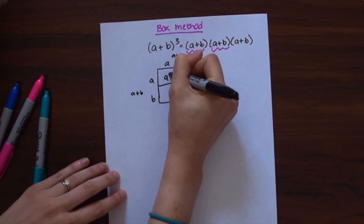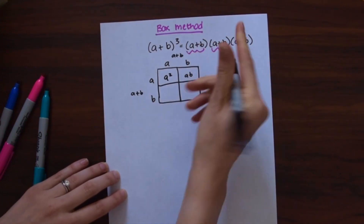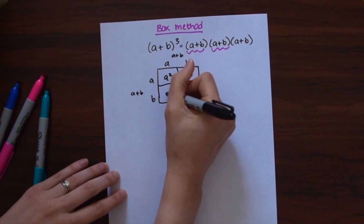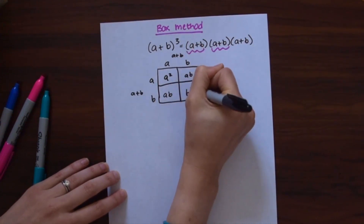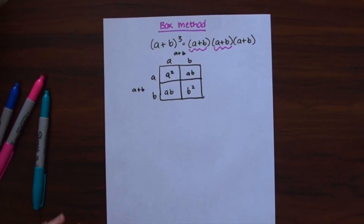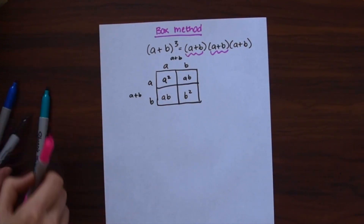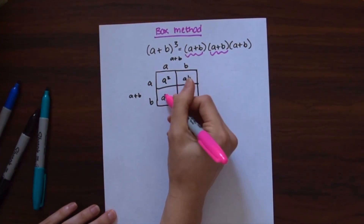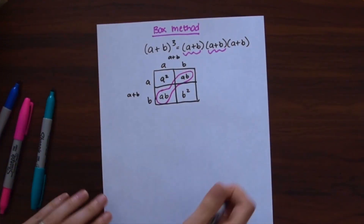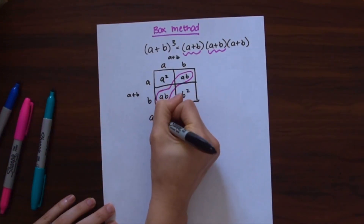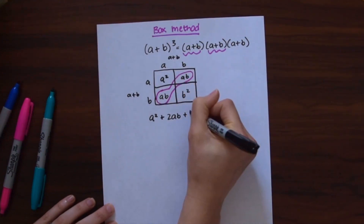So a times a is a squared, a times b is ab, a times b is ab again, and b times b is b squared. The solution to (a+b) times (a+b) is just all the terms in this box. Notice that we have some like terms we can combine, so we're left with a squared plus — combining the two ab terms — 2ab plus b squared.